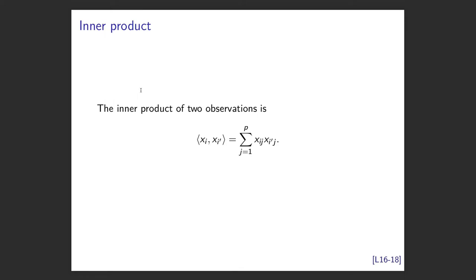To make this easier, let's recap the idea of an inner product. The inner product of two observations xi and xi-prime is computed by multiplying each corresponding element and summing them all up.